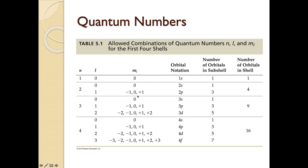This table is a nice summary. One additional term: subshell. A subshell basically refers to that particular energy level or n value. We have s orbitals at every single n value, and p orbitals at every n value starting at 2 and bigger. The number of m-sub-l values tells us how many orbitals of each type are in each subshell. When l is 1, there are 3 m-sub-l values, so there are 3 p orbitals in that subshell.